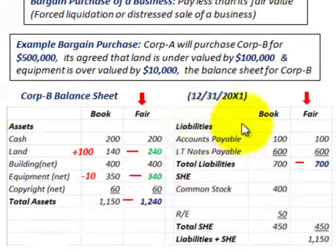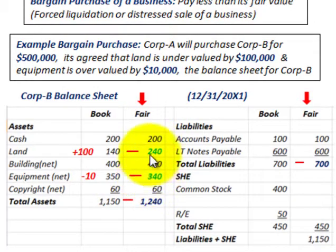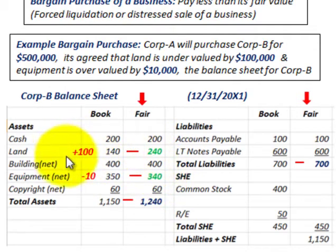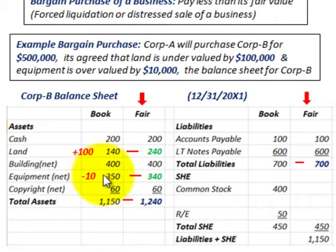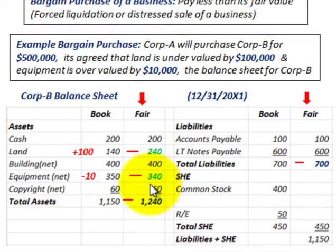Corporation B had recorded their assets and liabilities at their book value. When Corporation A purchases Corporation B, they have to reevaluate the assets and liabilities to their fair value, because that's what they're going to be buying. The land was undervalued by $100,000 — book value of $140,000 — so at fair value it would be increased to $240,000. The equipment was overvalued by $10,000, so the book value of $350,000 at fair value would be reduced to $340,000.